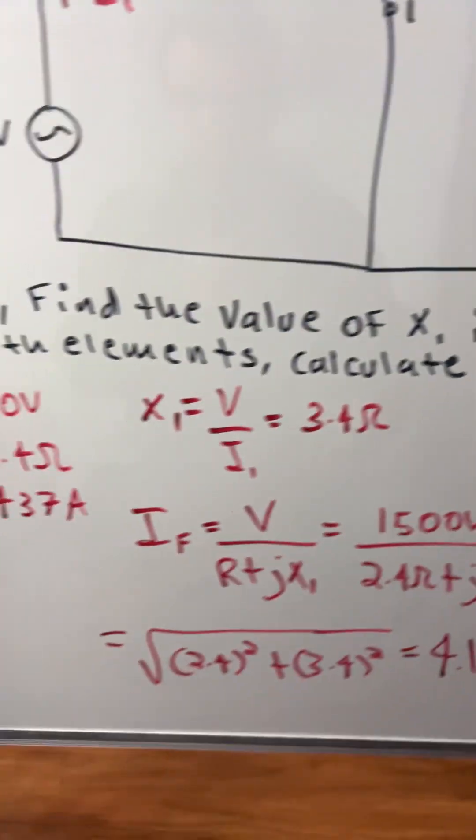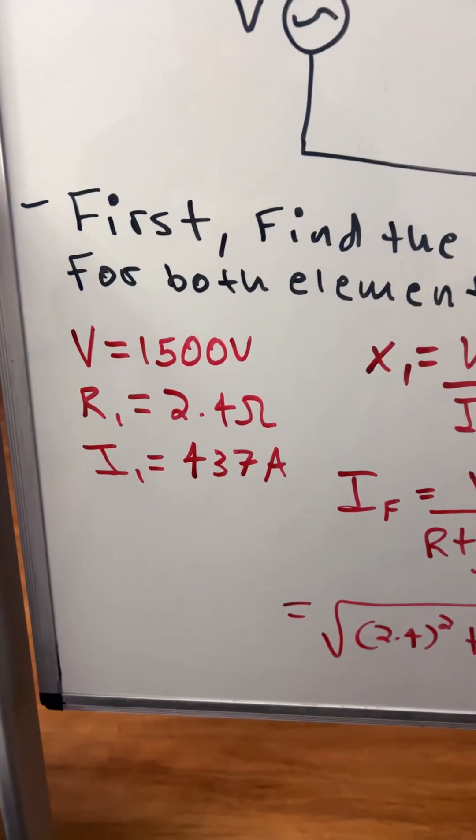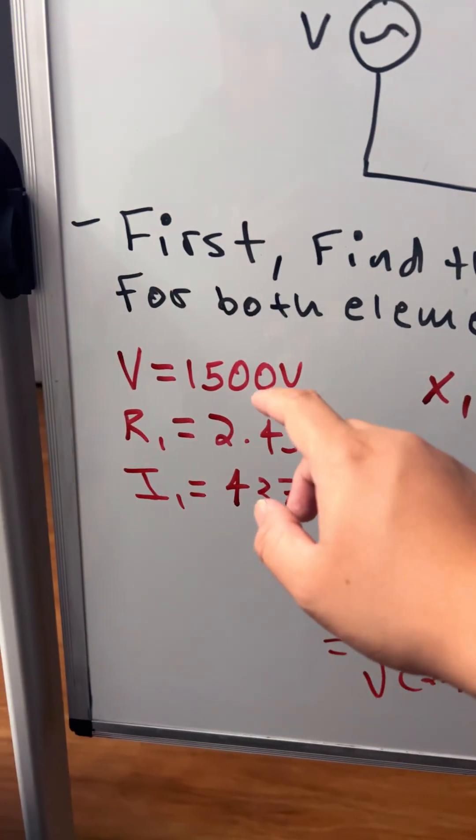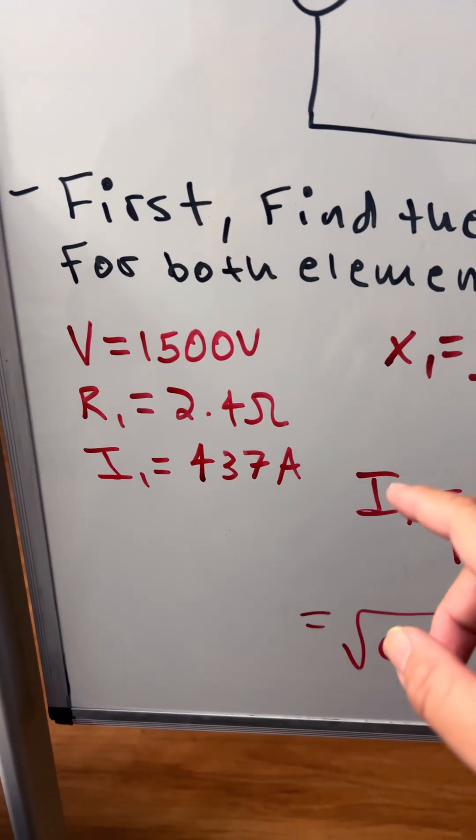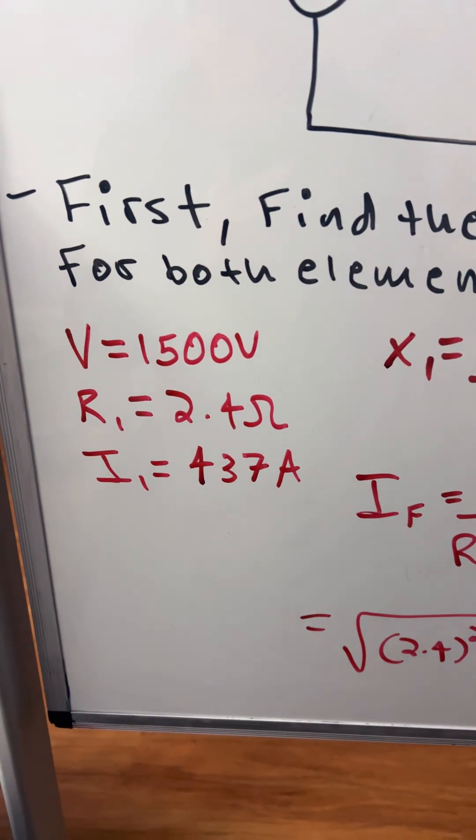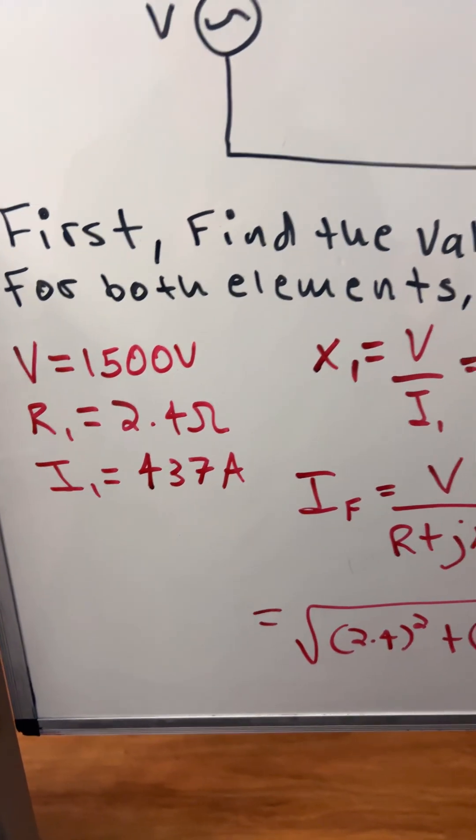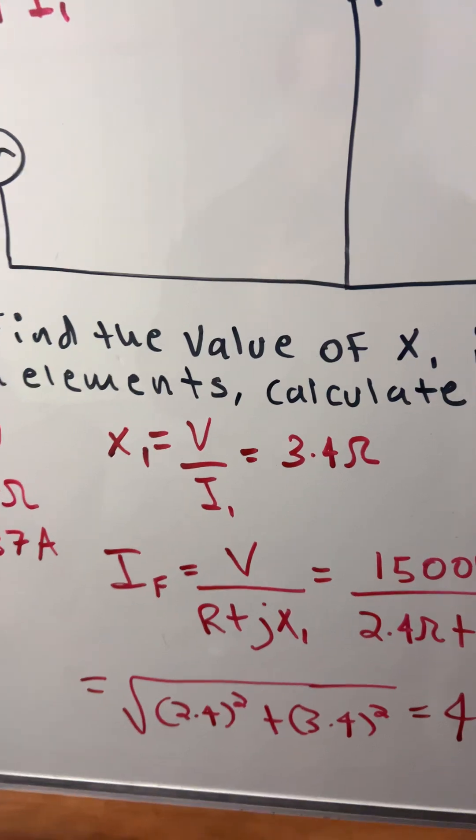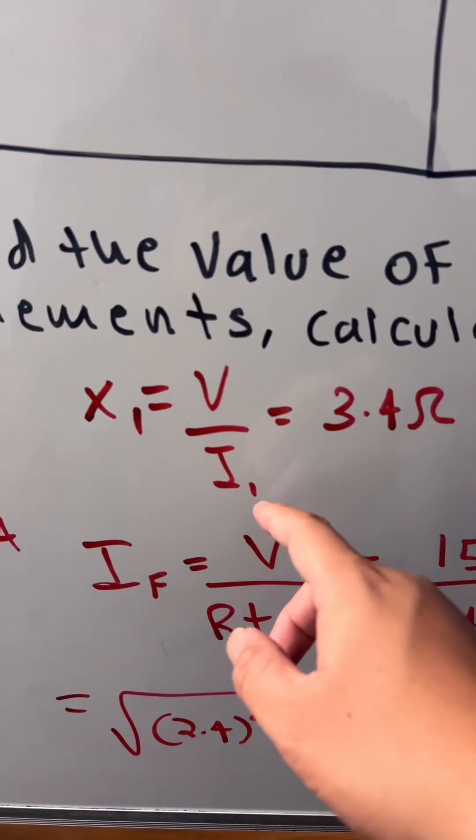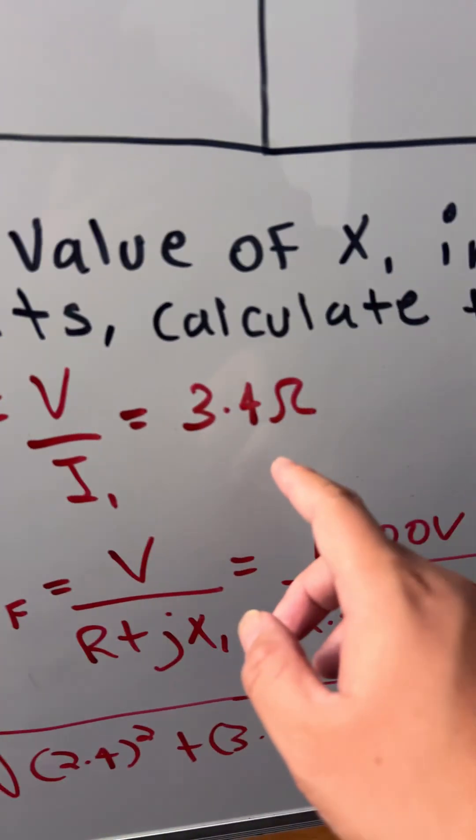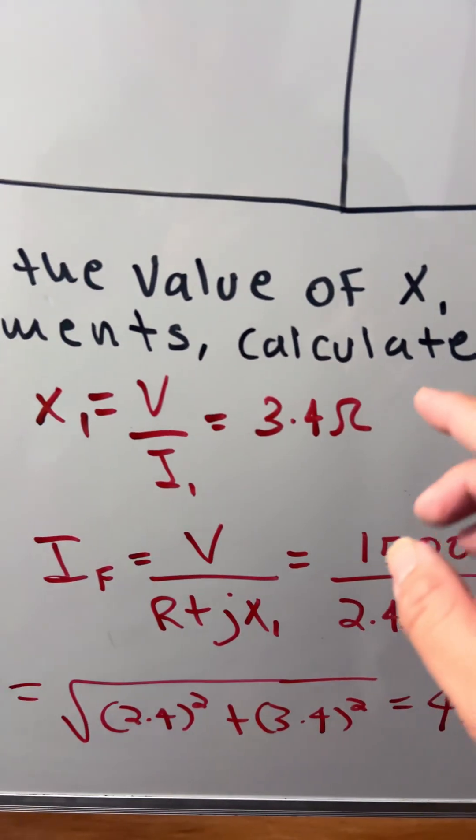Now back to the calculations. So we have voltage equals 1500 volts, resistance 2.4 ohms, and the current is 437 amps. So we're going to find X1 for the inductance. We have the voltage, we divide by the current I1, and that gives us 3.4 ohms.